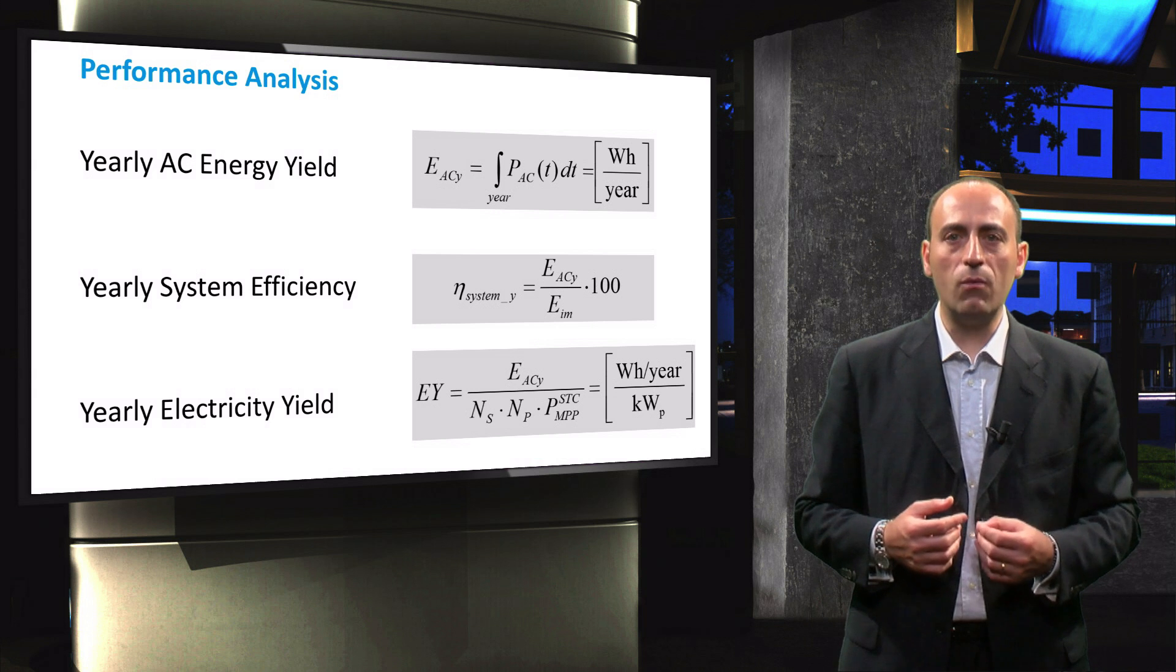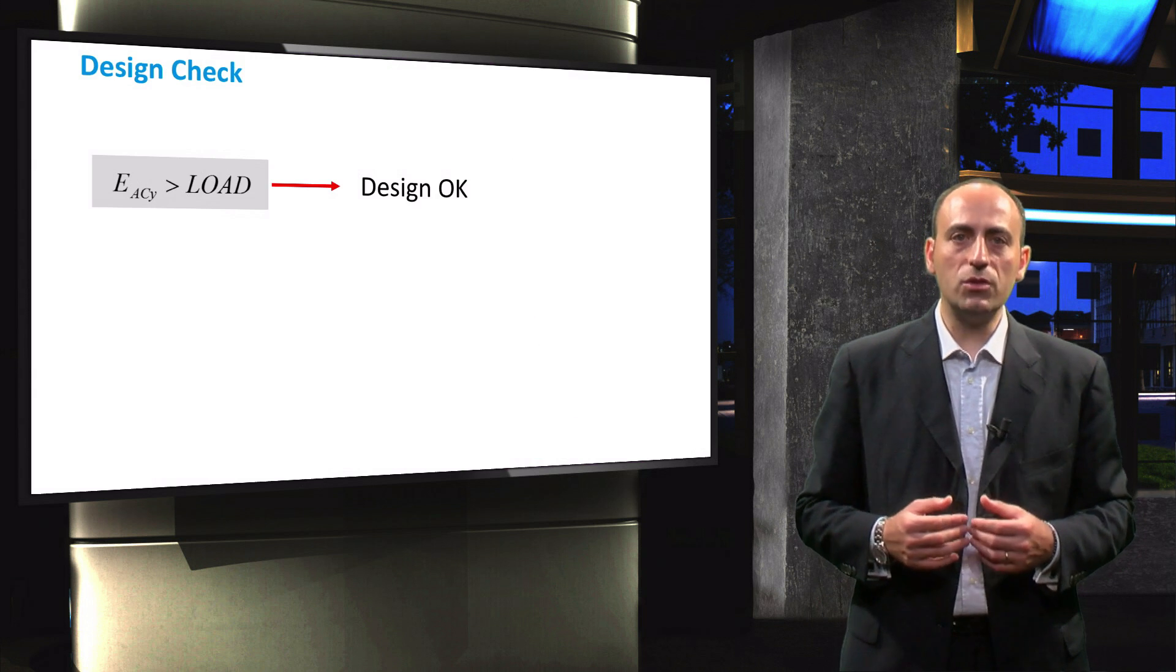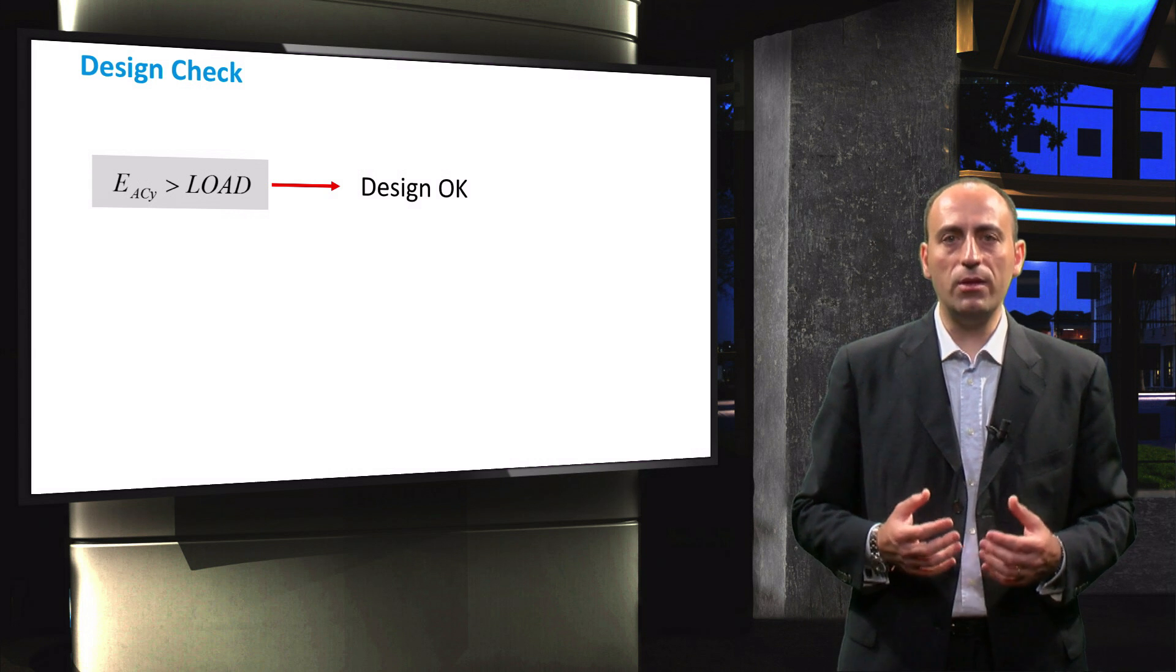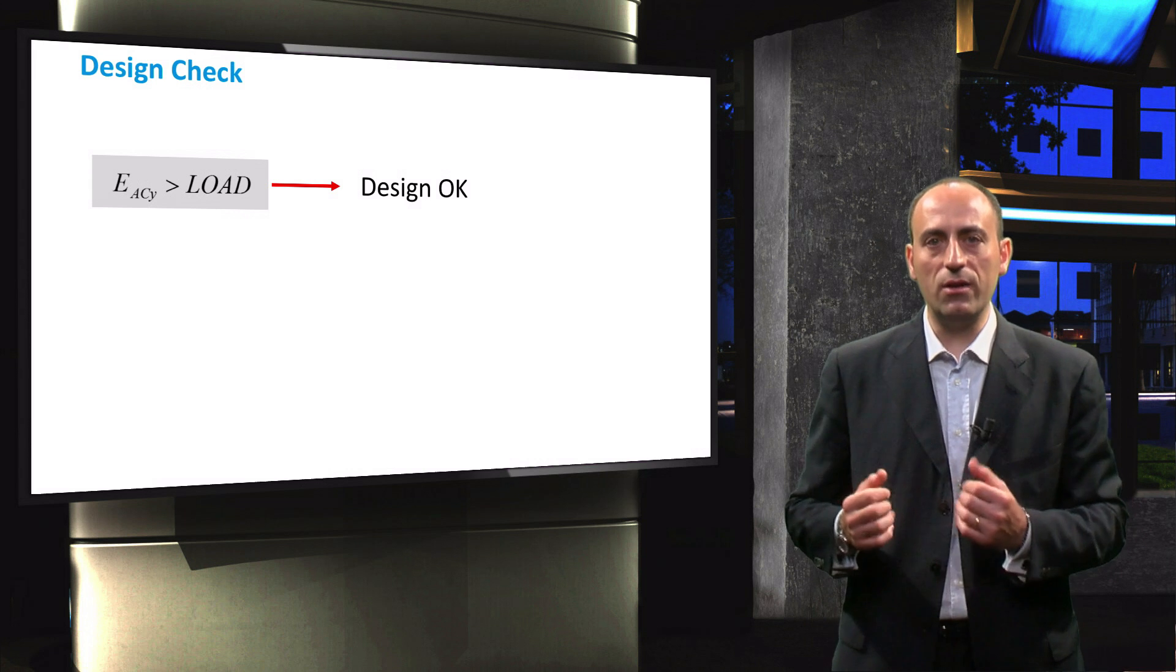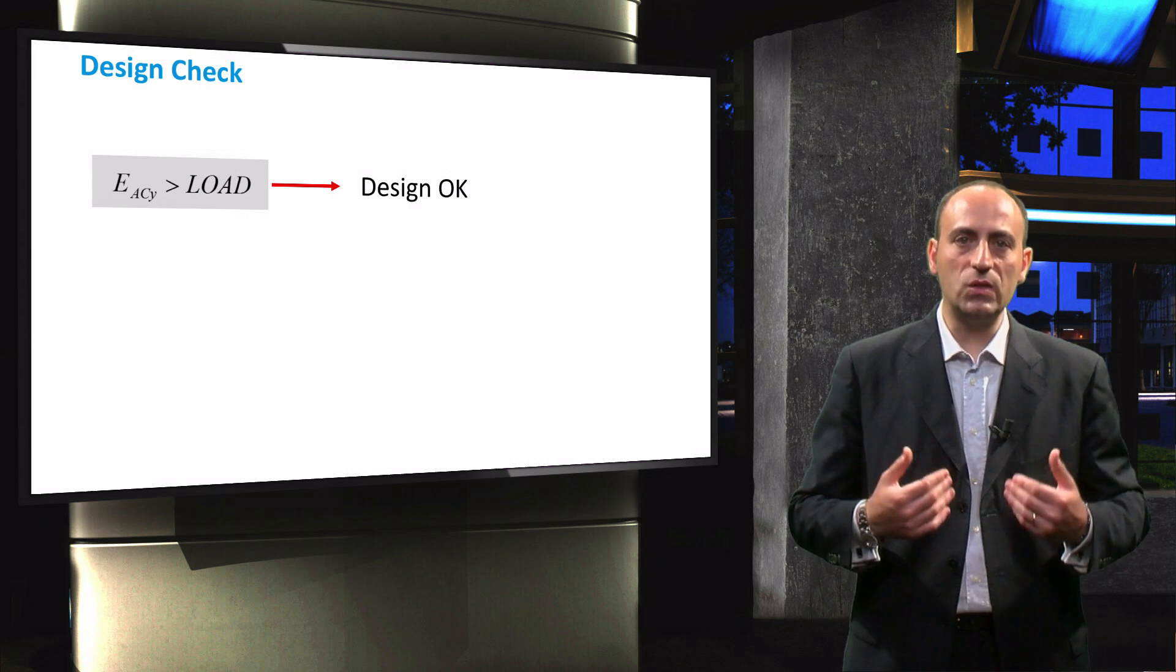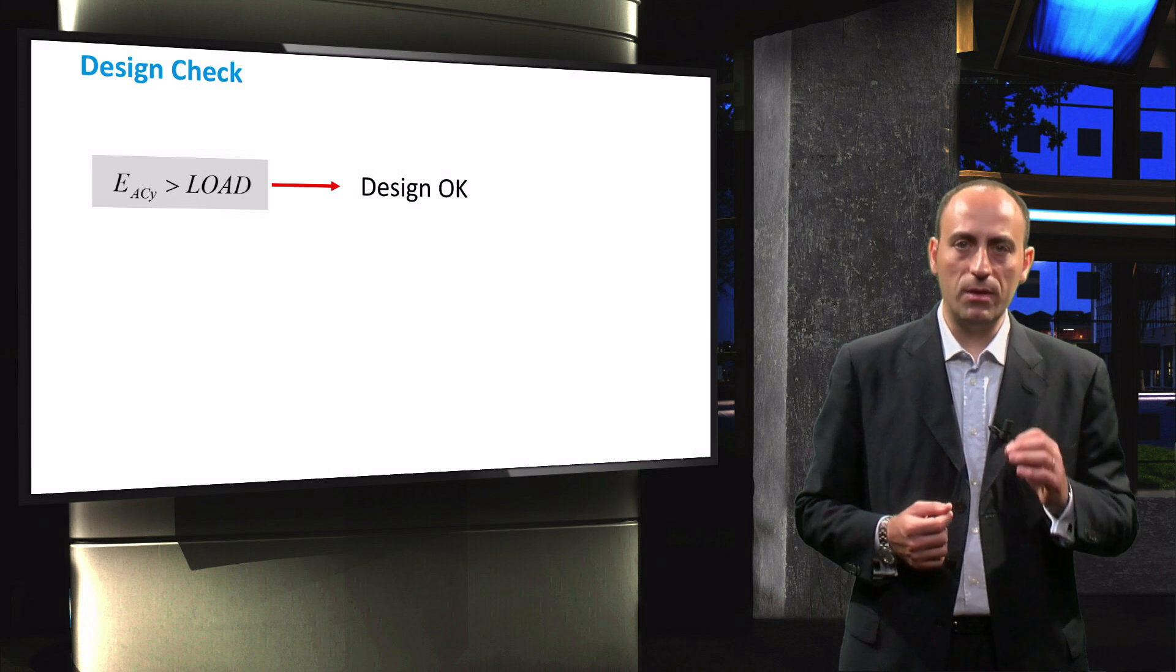The final step involves checking the design. We compare the annual energy generated by the PV system against the energy consumption of the loads. If the energy generation exceeds the load demand, the design of the grid connected PV system is approved.